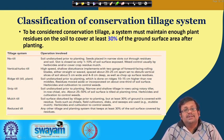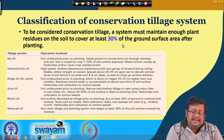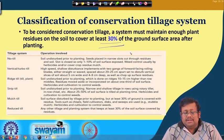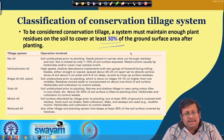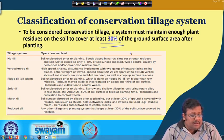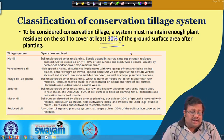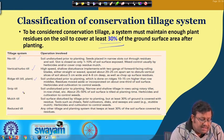For the classification of conservation tillage: to be considered a conservation tillage system, a system must maintain enough plant residues on the soil to cover at least 30 percent of the soil surface after planting. There are around six different types of tillage system under conservation tillage: no-till, vertical or turbo-till, ridge-till, strip-till, mulch-till, and reduced-till.